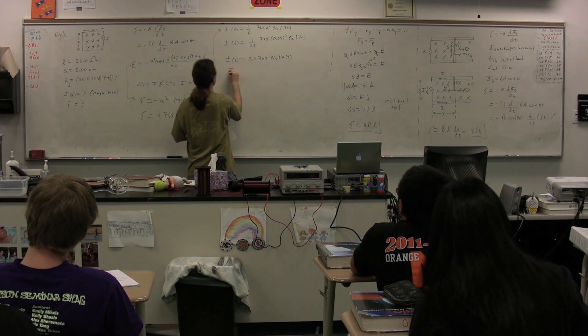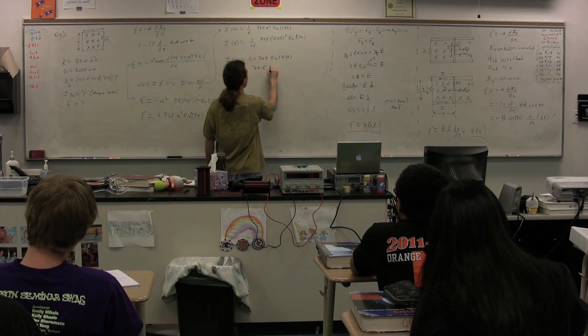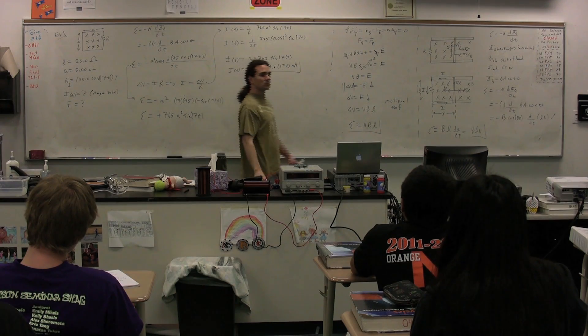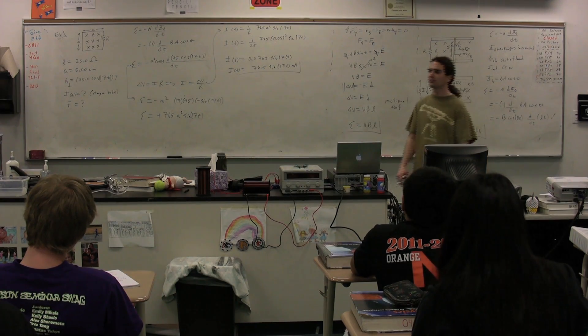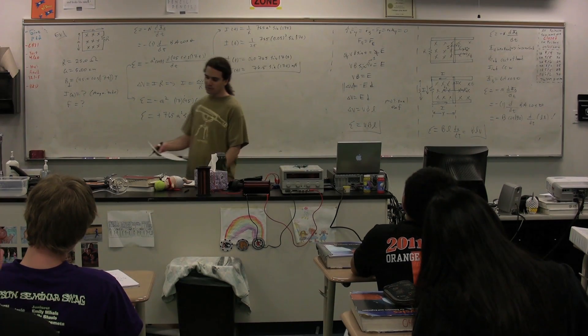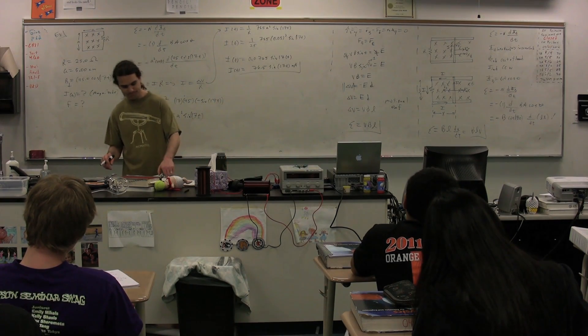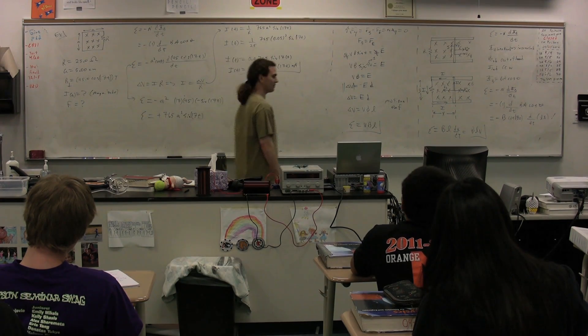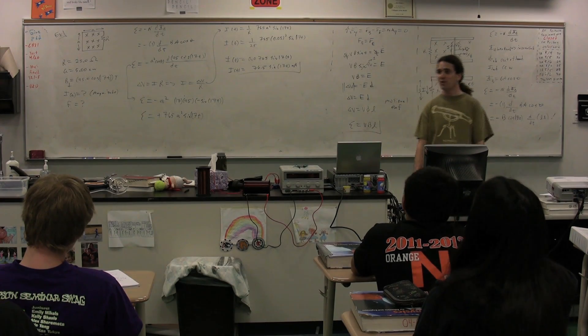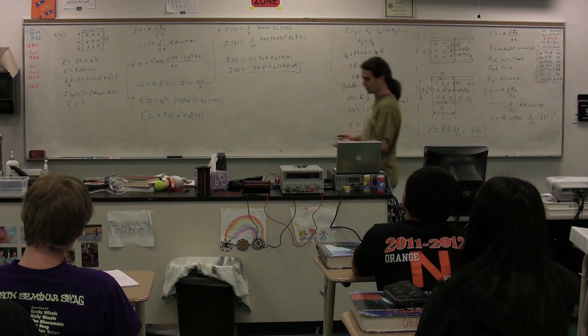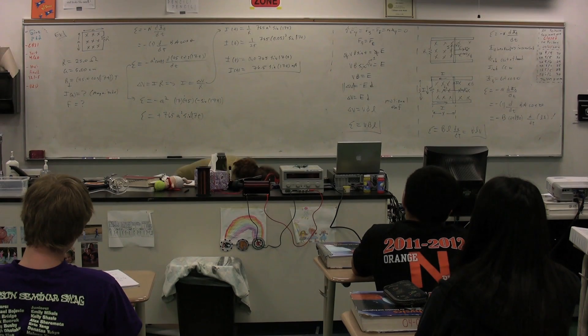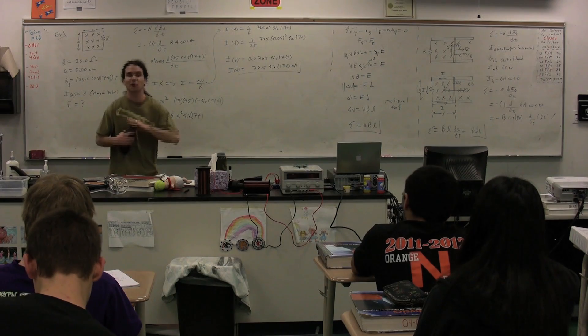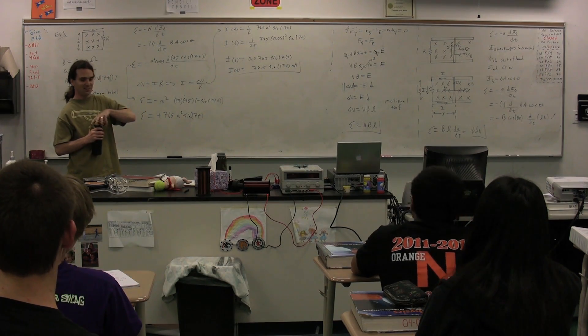In other words, the current as a function of time is equal to 76.5 sine of 17t in milliamps. Good. We figured out the magnitude of the current. Now, I've asked for the frequency of the current. This is where you should be able to look at what we've got on the board and recognize something that we did before. You should be able to identify something from that equation that we've just gotten for the current. It has to do with simple harmonic motion.